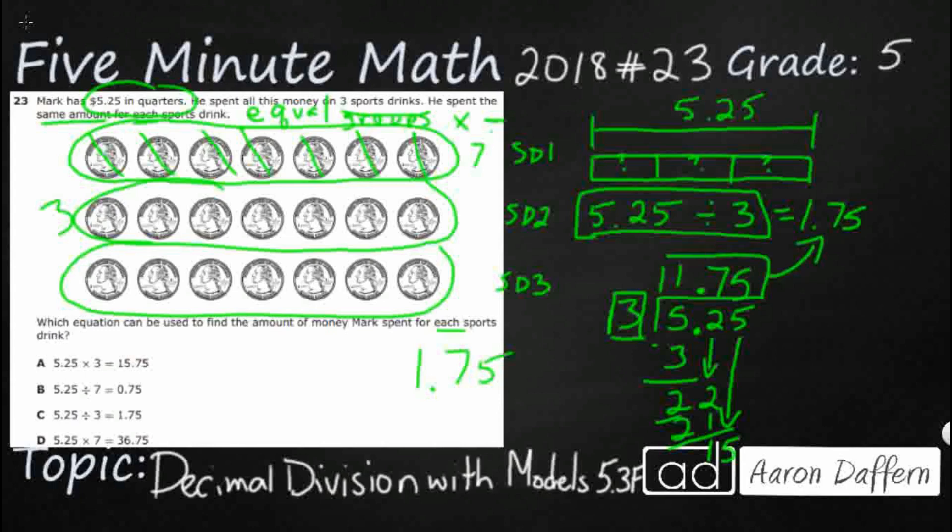So our answer here is going to be C. A at least gives you the right numbers, but you see we're multiplying with equal groups rather than dividing, so that's not going to be correct. And then B and C don't even use the right digits.